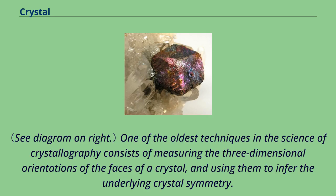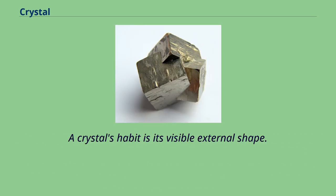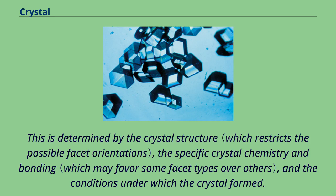One of the oldest techniques in crystallography consists of measuring the three-dimensional orientations of the faces of a crystal and using them to infer the underlying crystal symmetry. A crystal's habit is its visible external shape, determined by the crystal structure, the specific crystal chemistry and bonding, and the conditions under which the crystal formed.